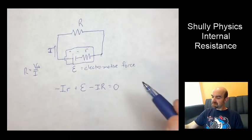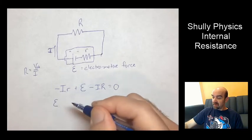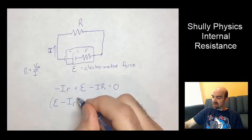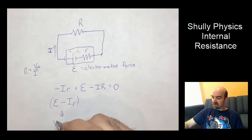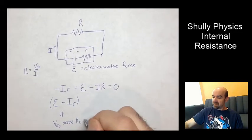Now if we rearrange this, I get a negative, I've got an epsilon, sorry, minus I R.